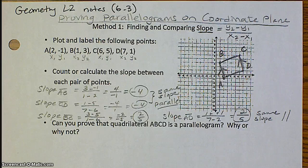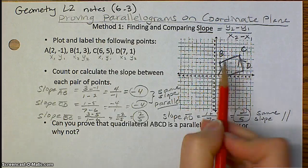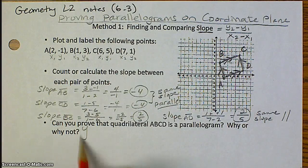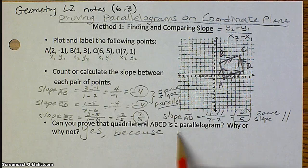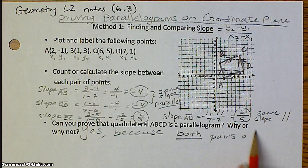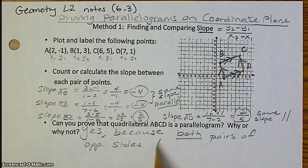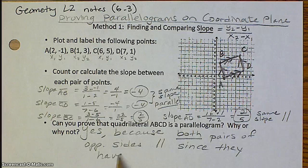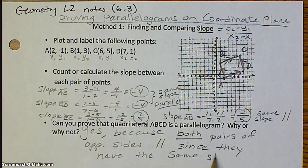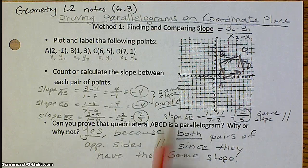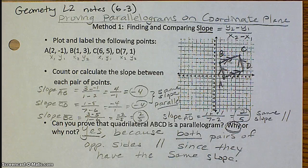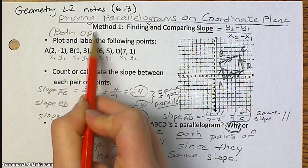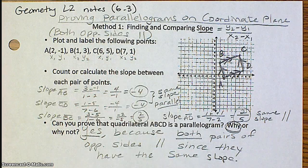Now, the reason why we're going to do this work is to answer the question, is this a parallelogram? Well, now that I can see both pairs of opposite sides are parallel, yes. Yes, this is a parallelogram because both pairs of opposite sides are parallel. And how do we know that they're parallel? Since they have the same slope. So you always want to make sure that you answer the question and then why or why not. So that is method 1, finding and comparing the slopes, which goes along with both opposite sides parallel. That's the property that this method proves.